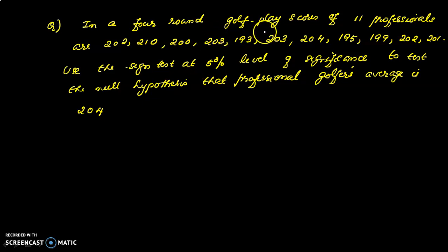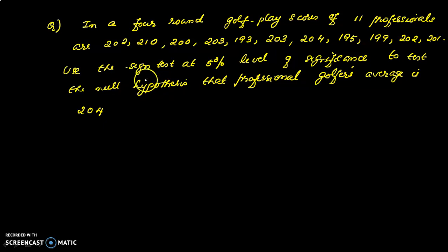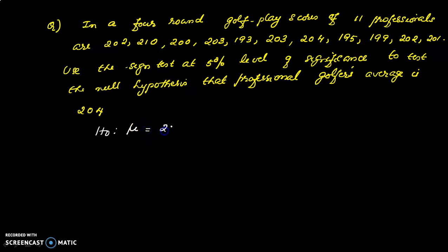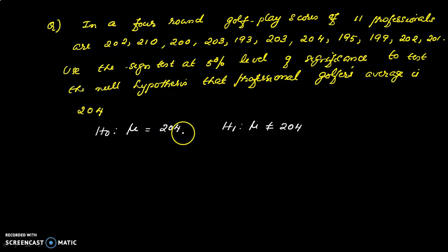Use the sign test at 5% level of significance to test the null hypothesis that the professional golfer's average is 204. We test H0: mu = 204 against H1: mu not equal to 204 (two-tailed alternative).